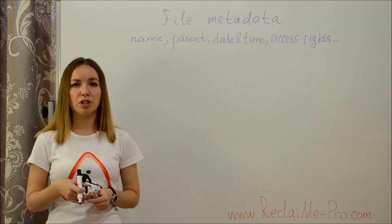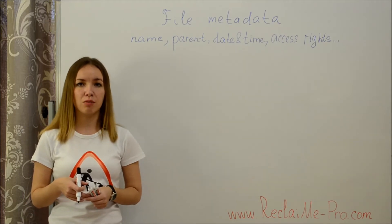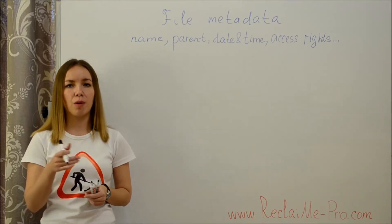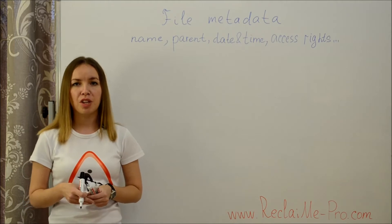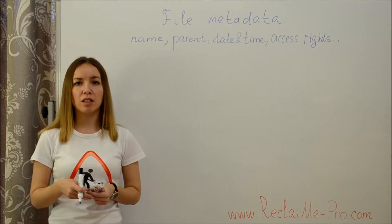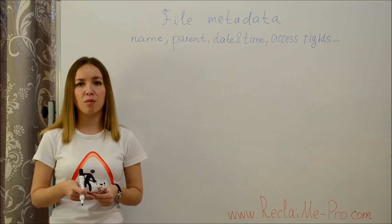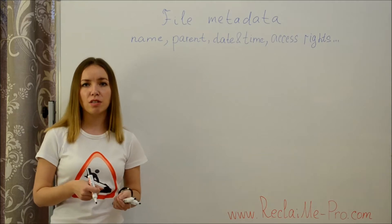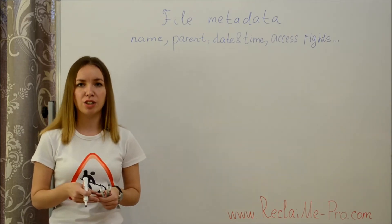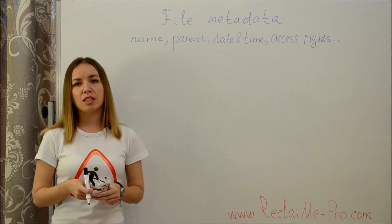What metadata exists and how it is stored is determined by a file system. For example, a file can have one or several names. As for date and time, typically the standard set includes the time of creation, the last modification, and the last read.